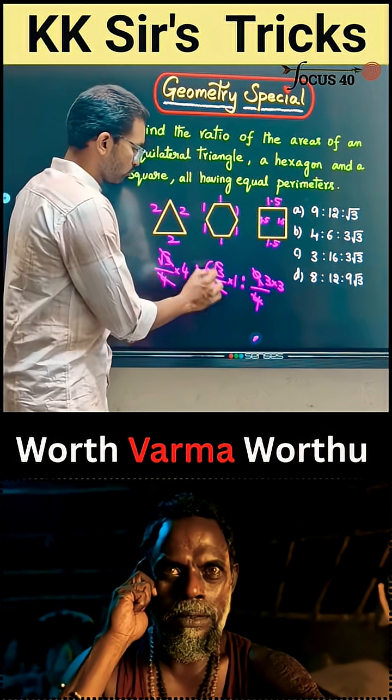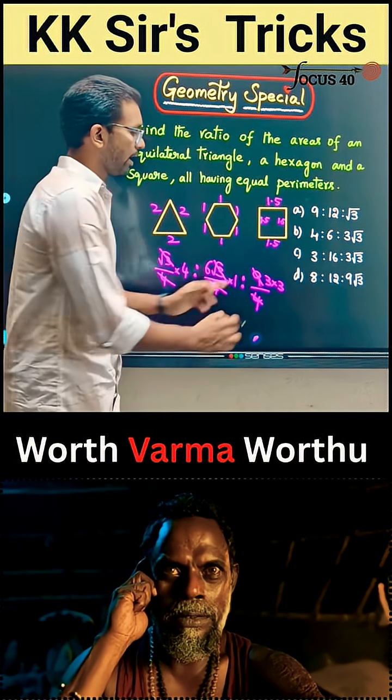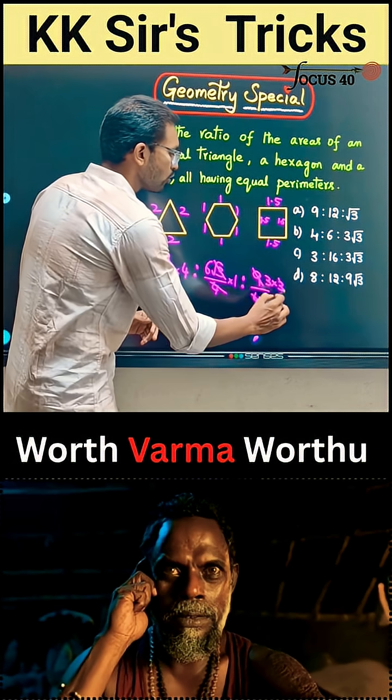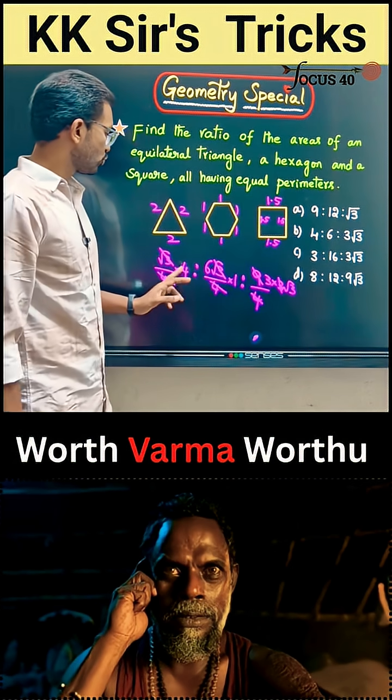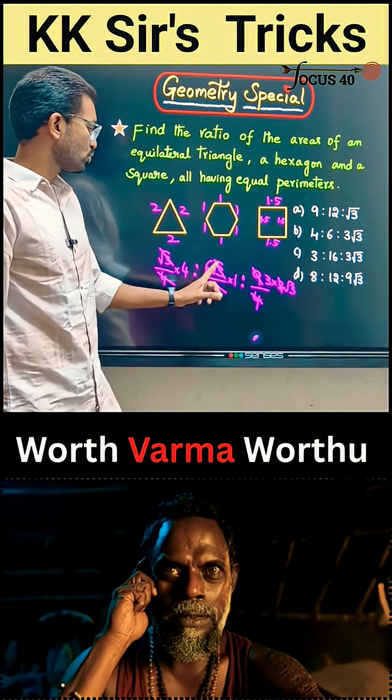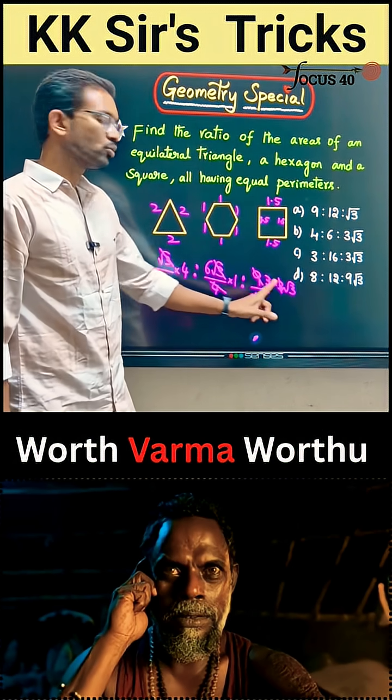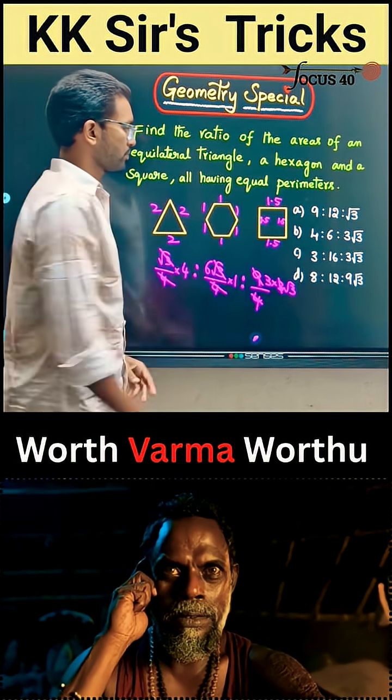Root 3 gets cancelled in the simplification. So the final ratio of areas of the equilateral triangle to hexagon to square is 4 : 6 : 3√3.